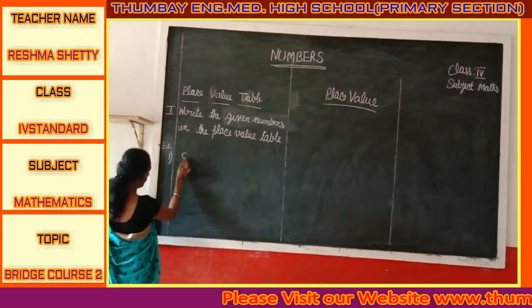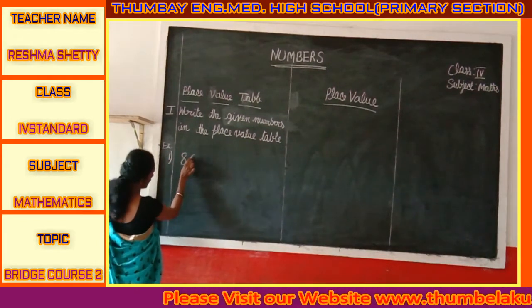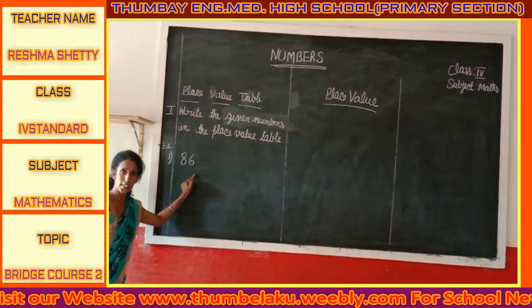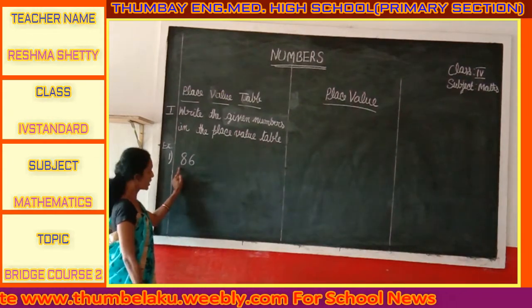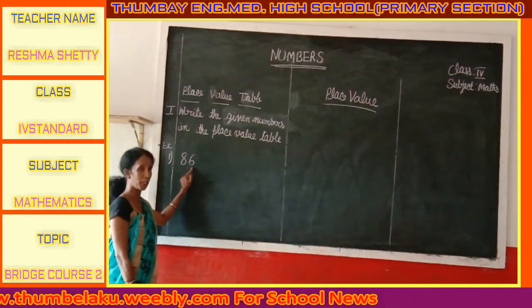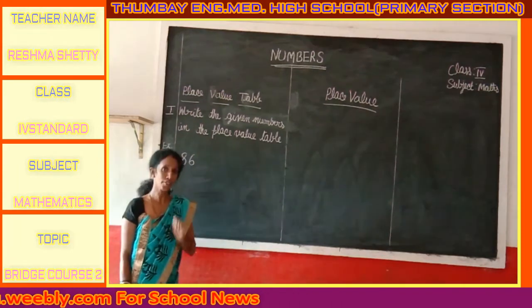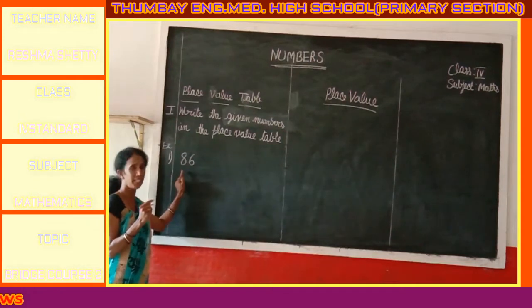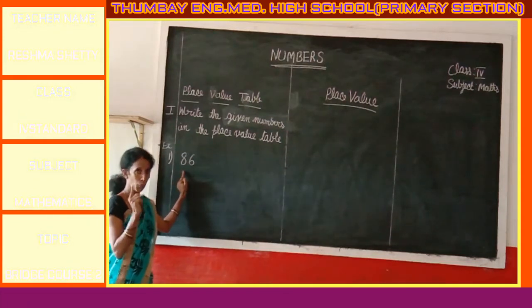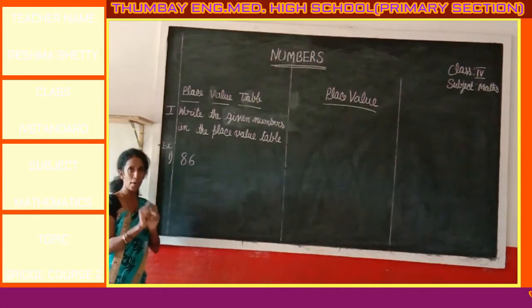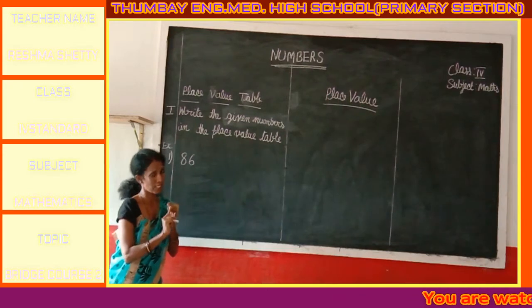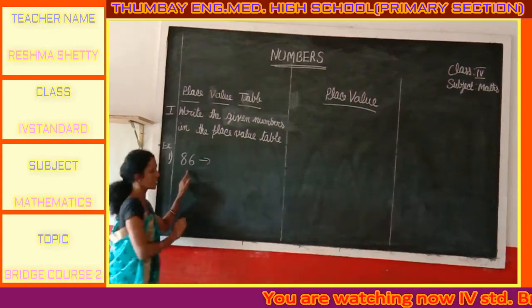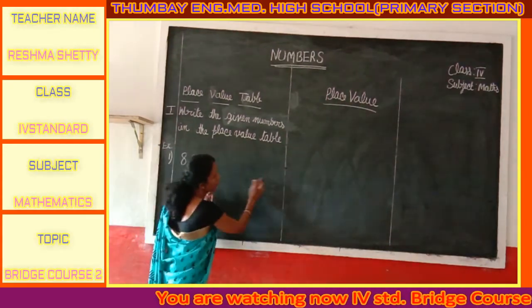Now I have the number 86. Is it a two-digit number, children? Yes, it is a two-digit number. In our previous class we studied that numbers are made of units and tens. So in two-digit numbers we have units and tens. Let us rewrite this number in the place value table.